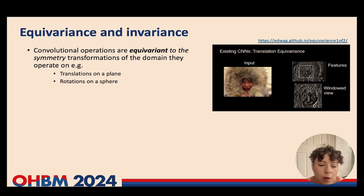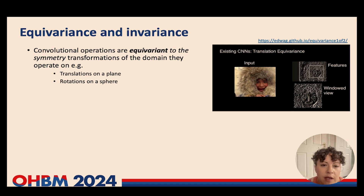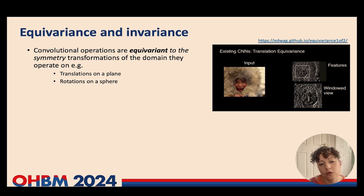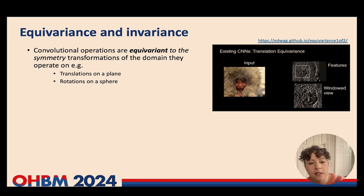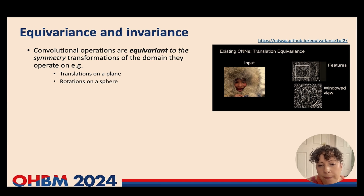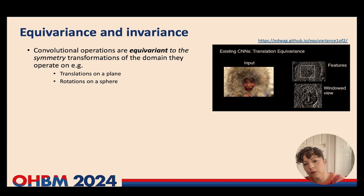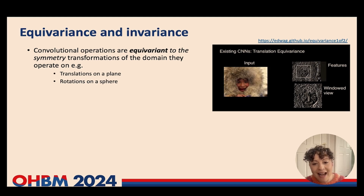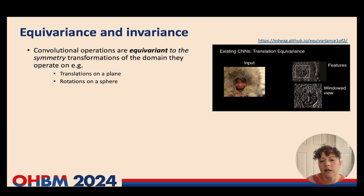Importantly, this convolutional filtering operation is equivariant to the symmetry transformations of the domain, where the symmetry group refers to the class of transformations used to transform the filter across the domain. For 2D and 3D images that's a translation; for a sphere it would be a rotation. Equivariance means that the output of the operation transforms in the same way as the input — if we transform our view of the Eskimo across the scene, the output of our convolution stays the same but transforms in exactly the same way.